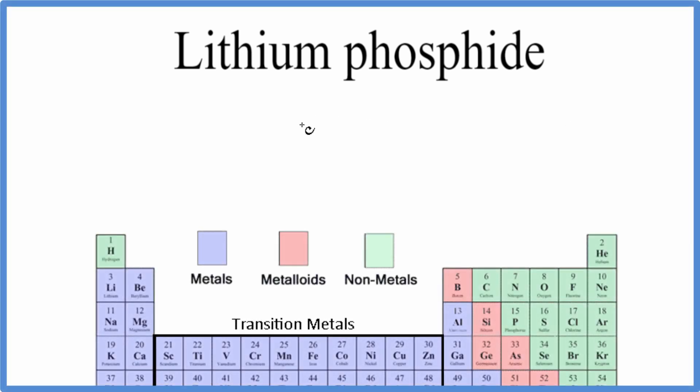For lithium phosphide, we have lithium on the periodic table, that's Li, and phosphide, that's the phosphorus atom. We put a P for that right there.